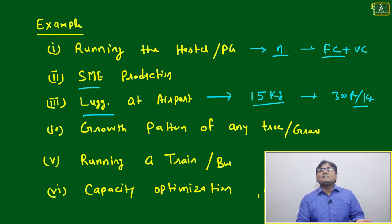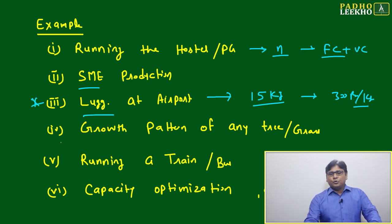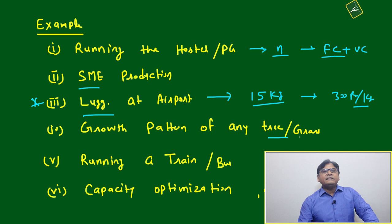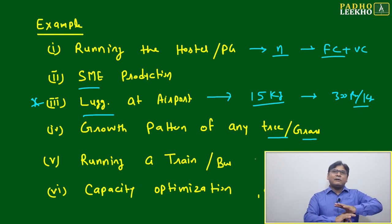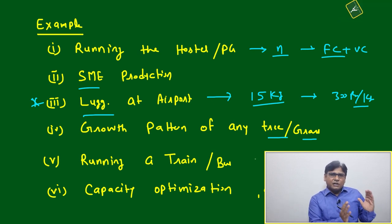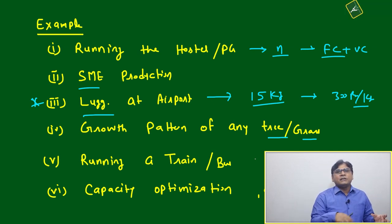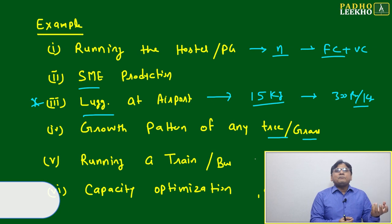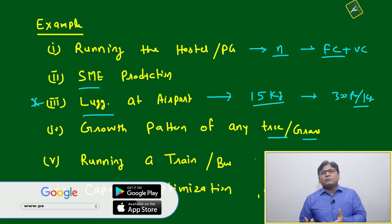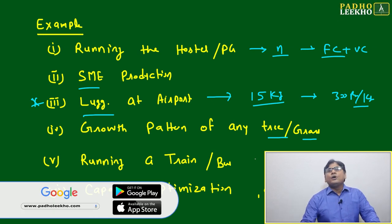Next is growth pattern based on that. One time in CAT a question has come, very good question we'll discuss during workshop. Growth pattern of any tree or grass - that growth pattern depends on maybe some grass will be there initially, it will keep on growing. Maybe a few animals keep on coming for taking that grass. Then at a particular time, what will be the amount of grass available? Based on that we will be able to make the linear relationship.